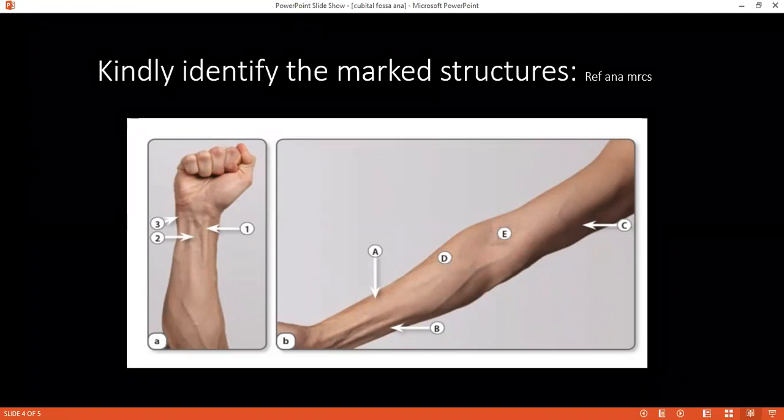What are the movements which are present at elbow joint? It's flexion, extension, pronation and supination.